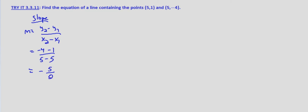And what you should notice is we're dividing by 0. That's undefined, so the slope is undefined. And what that tells us is it's a vertical line.